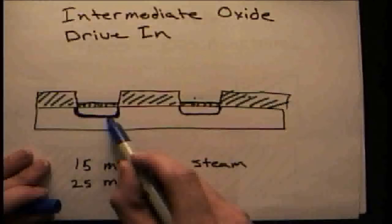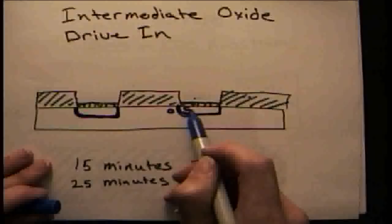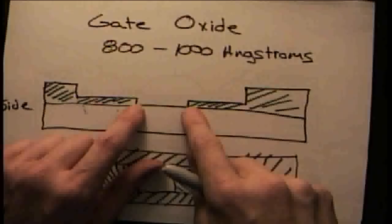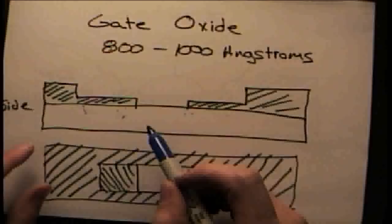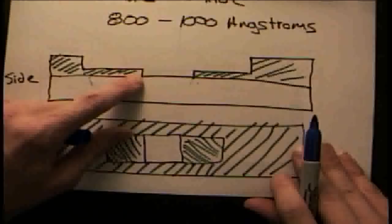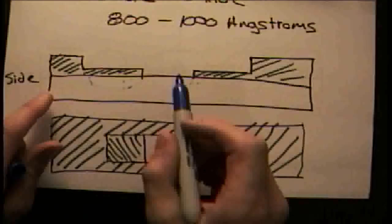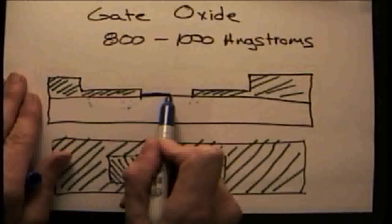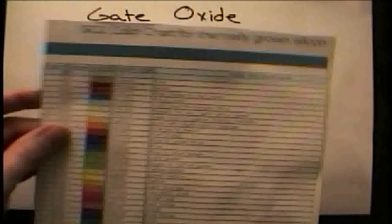The next step is to etch the gate oxide area. You'll again use the vinyl masks and open up where the gate region will be. You'll etch this away, wait for it to be hydrophobic again, then put it into the furnace at 1,000 degrees without steam. This will vary depending on how much humidity you have in your lab, house, or kitchen. You'll grow a thin layer across, shooting for 800 to 1,000 angstroms.